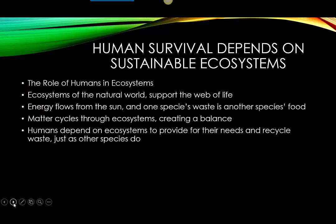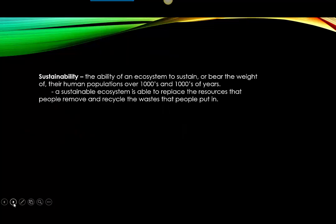We know that energy flows from the sun, and that one species' waste is another species' food. Matter cycles through these ecosystems, creating a balance, and humans depend on ecosystems to provide for our needs and to recycle waste, just as other species do. Sustainability is the ability of an ecosystem to sustain or bear the weight of human populations over thousands and thousands of years.